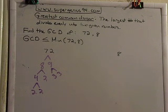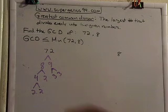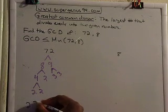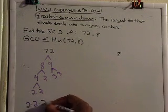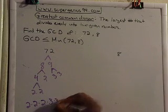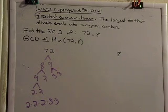And then from there what can we do? From there we write down all the prime factors. So the prime factorization of 72 is 2 times 2 times 2 times 3 times 3.